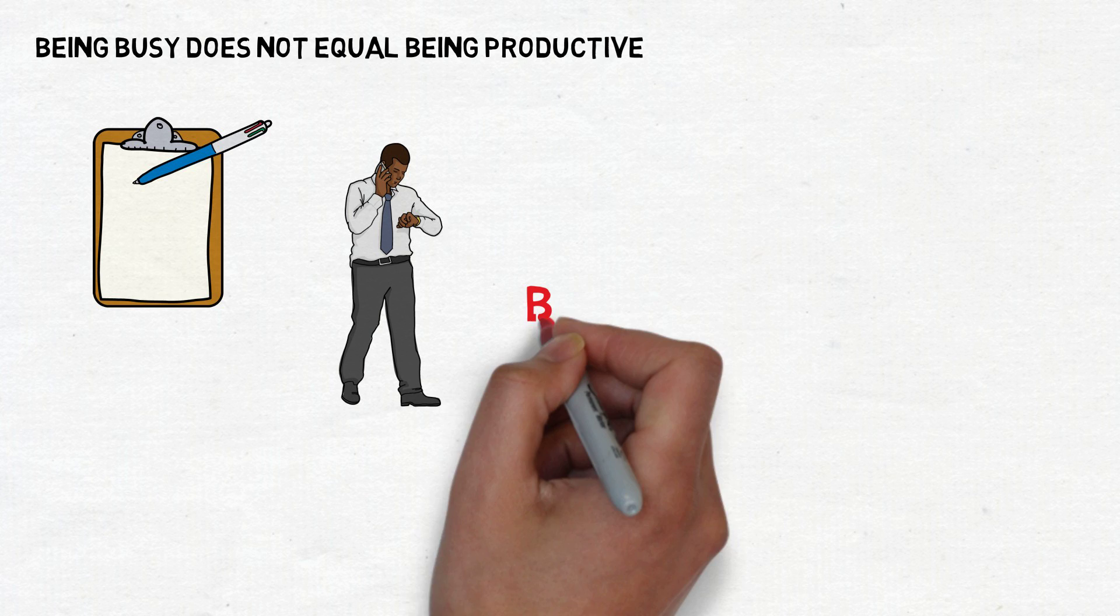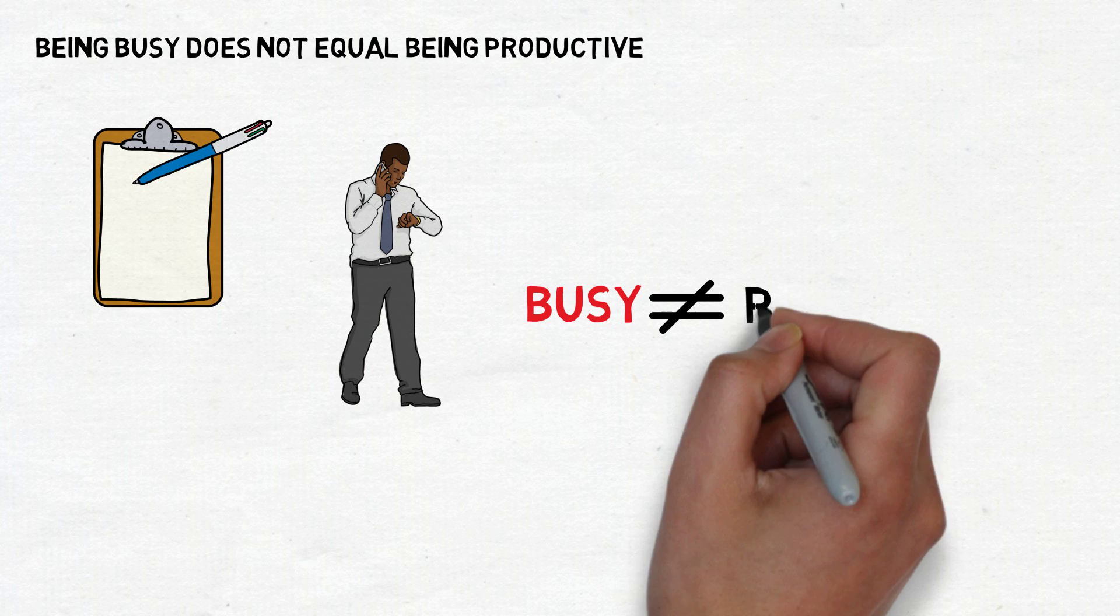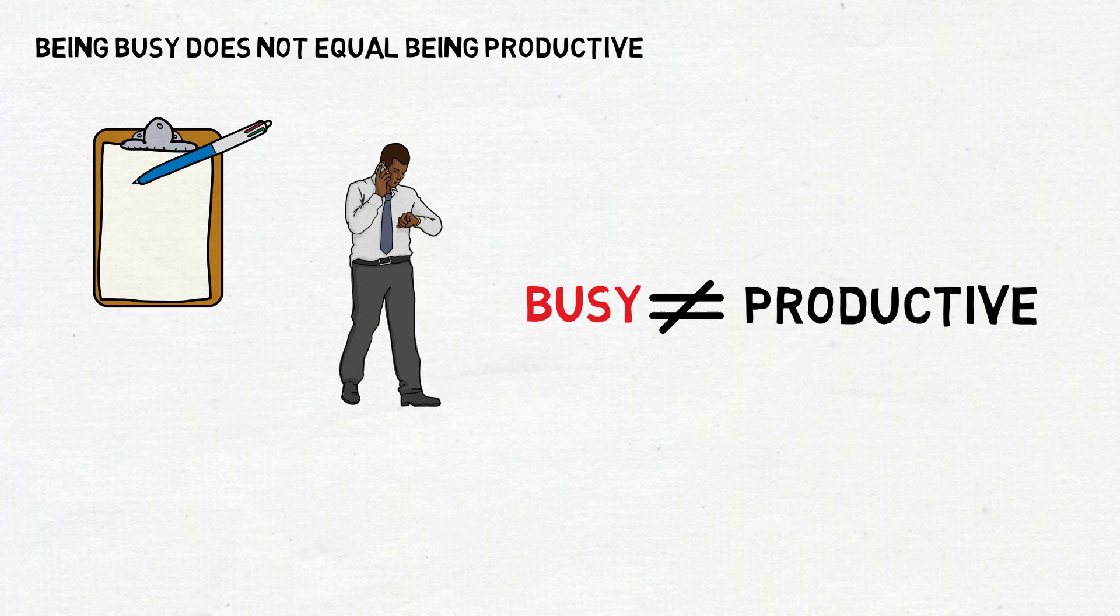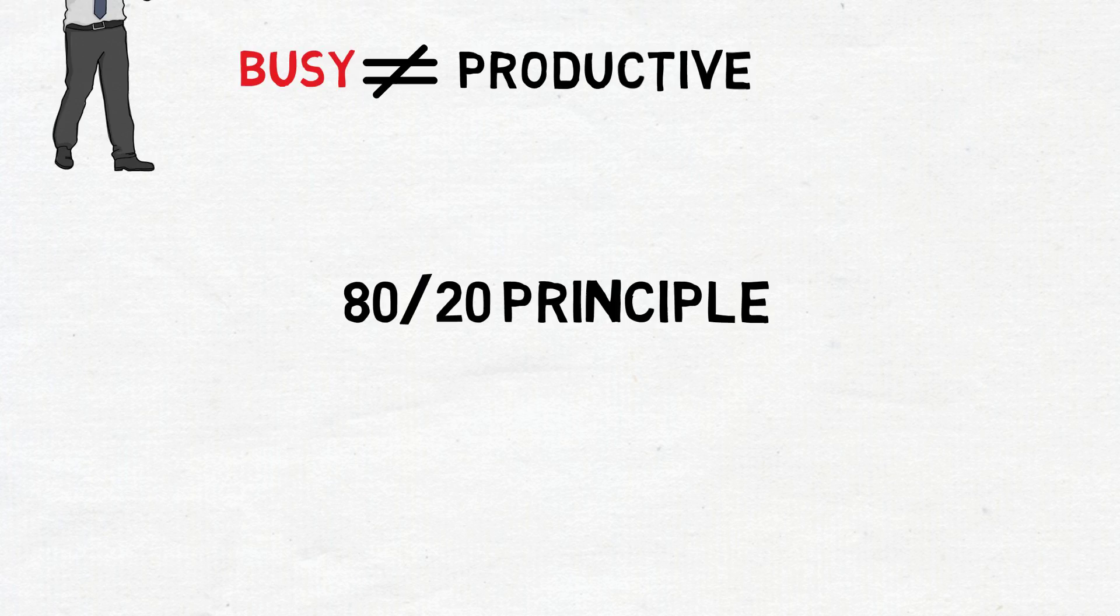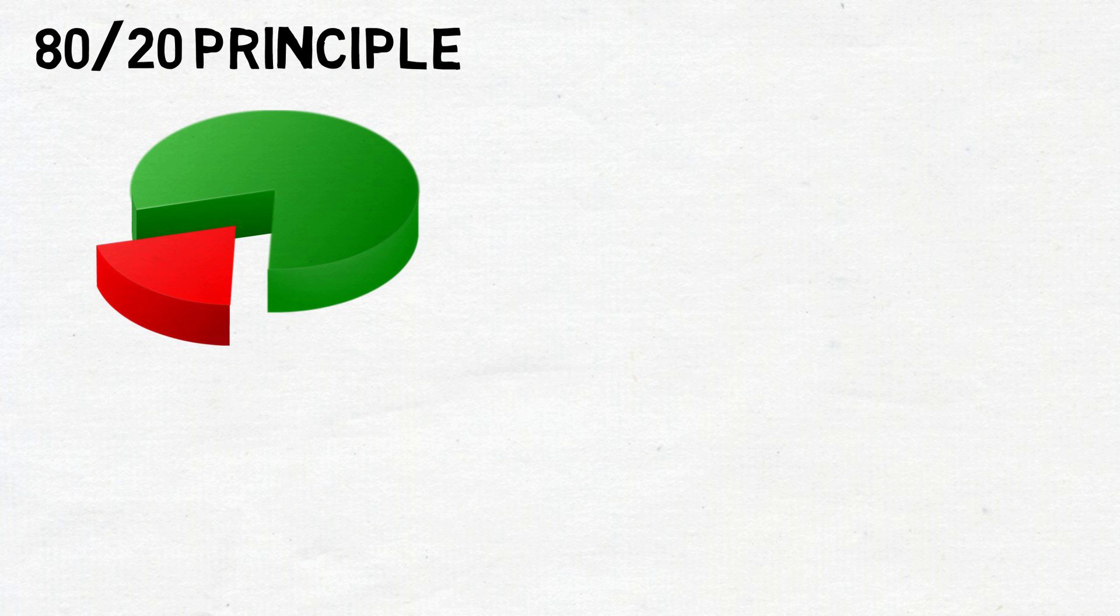Staying busy with a bunch of things off your meaningless to-do list does nothing to help you achieve success. Being busy does not equal being productive. Why is this important? Because of the 80/20 principle.